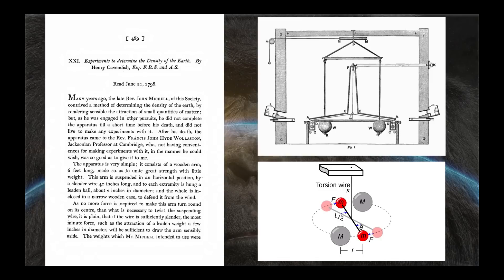By rendering sensible the attraction of small quantities of matter. But as he was engaged in other pursuits, he did not complete the apparatus until a short time before his death and did not live to make any experiments with it. After his death, the apparatus came to Reverend Francis John Hyde Wollaston, Jacksonian professor at Cambridge, who not having conveniences for making experiments with it, was so good as to give it to me. So that's sort of the history of it. The idea was to determine the density of the earth.